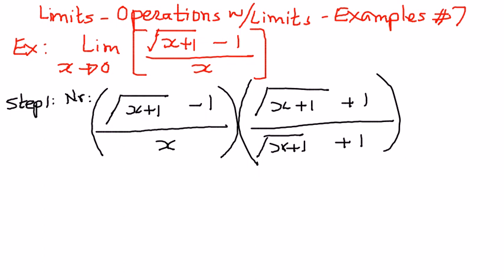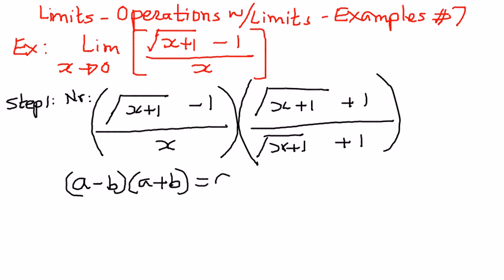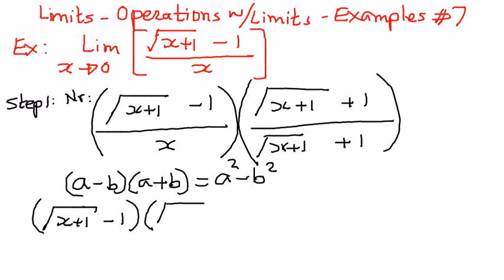By multiplying and dividing by the conjugate, we are not changing the original expression. But by doing that, we will be able to rationalize the numerator. And to look at a similarity — we know from the special forms of polynomials that a minus b, times a plus b, can be written as a squared minus b squared. So if we look at the numerator parts, we have square root of x plus 1, minus 1, times square root of x plus 1, plus 1.